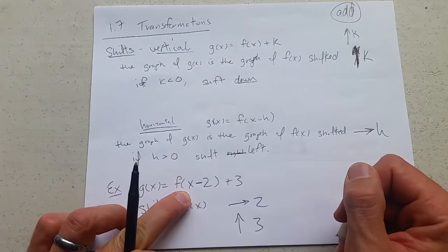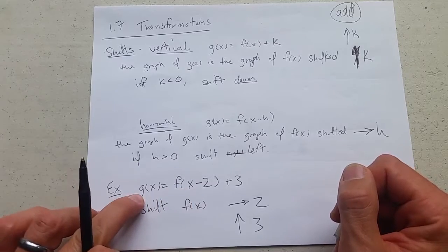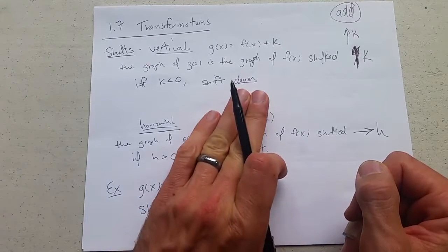So if I knew what the graph of regular f looked like, I could just take that graph, go two to the right and two up.